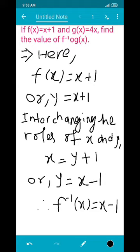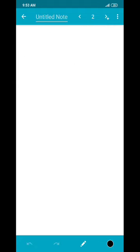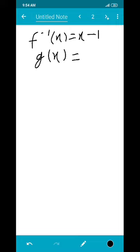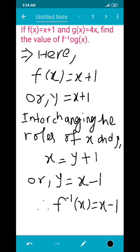So I'm going to write again: f inverse x is equals to x minus 1, and g(x) is equals to 4x.